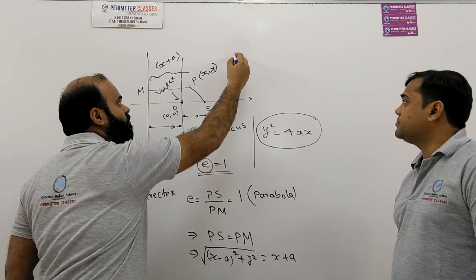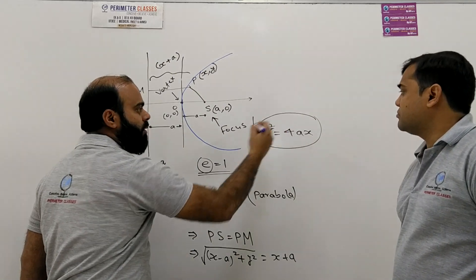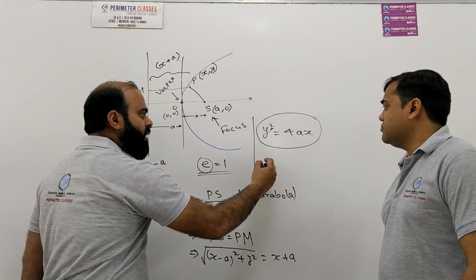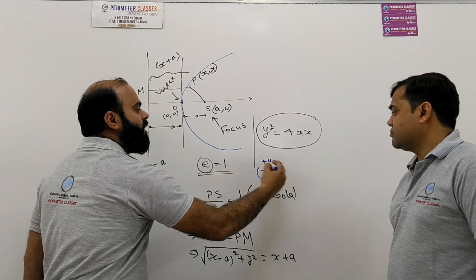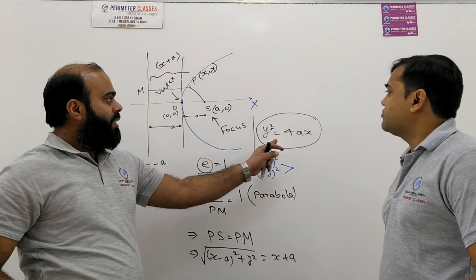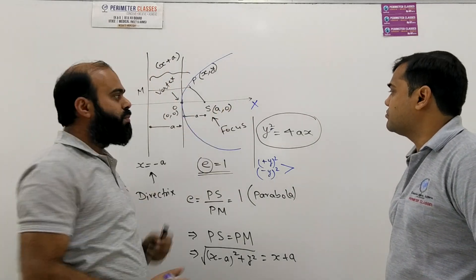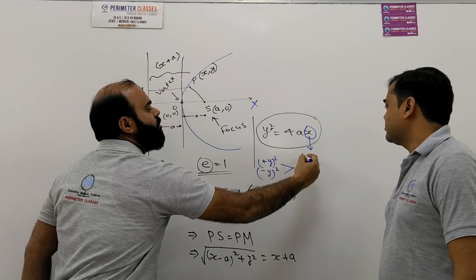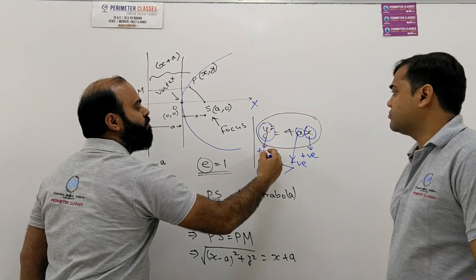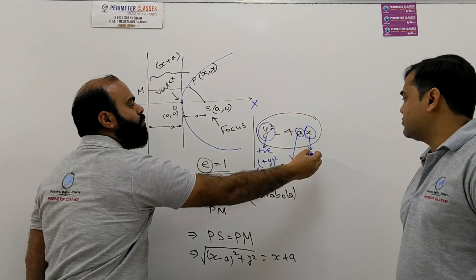The graph of y² = 4ax is symmetric about the x-axis, because y is squared — whether you take +y or −y, y² remains the same. However, x must be positive only, since 'a' is a positive quantity and y² is also positive. So y can be negative or positive, but x must be positive — the graph lies entirely in the positive x direction.